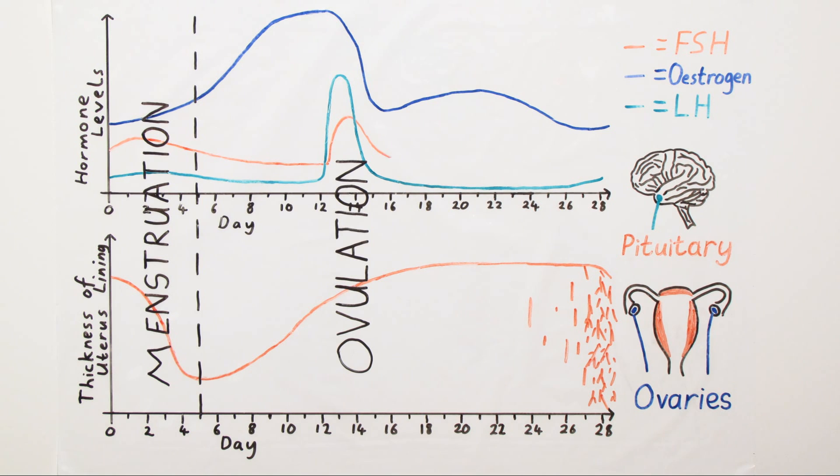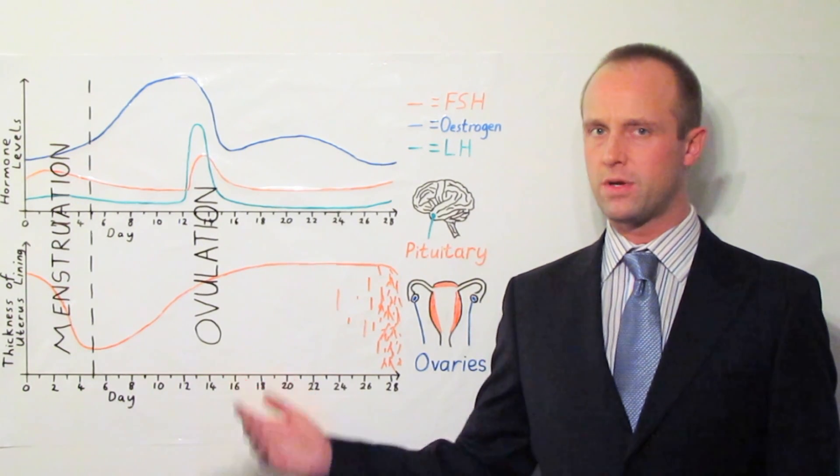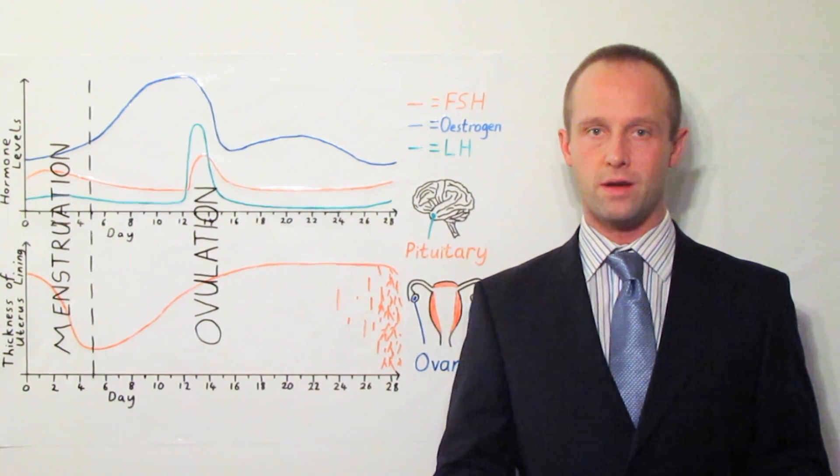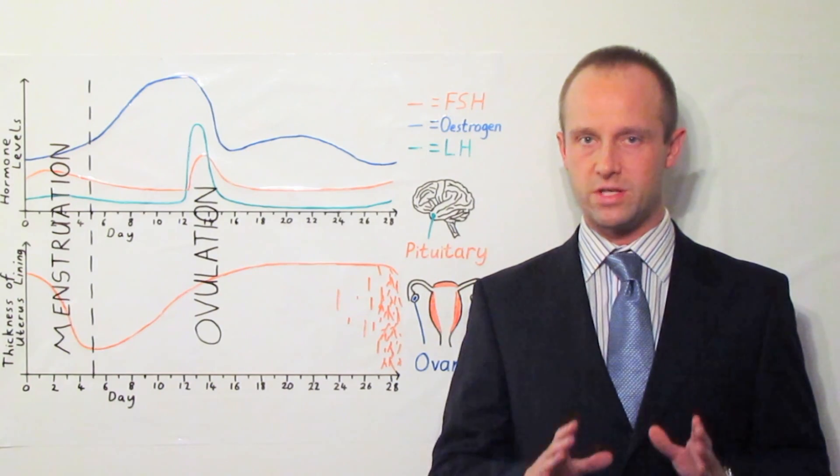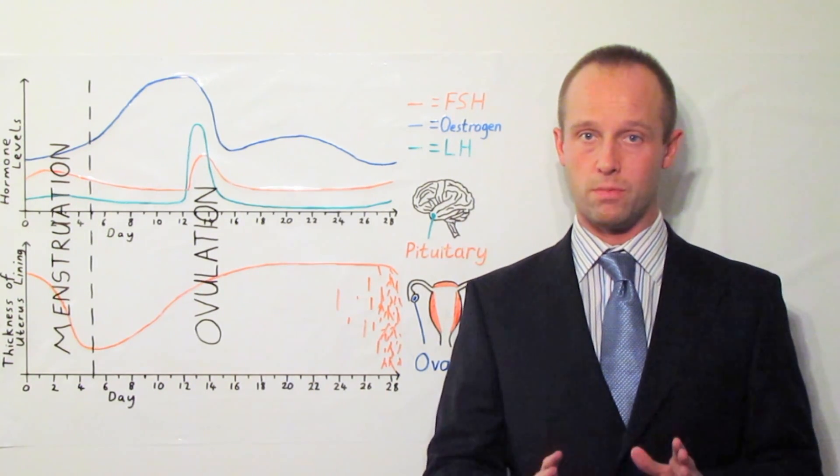Finally, FSH levels fall and remain low until it gets round to the start of the menstrual cycle again and the whole process begins once more. This is a pretty complicated looking graph but don't worry, no one's going to ask you to reproduce this from memory. The things which you need to know about this are much more basic.